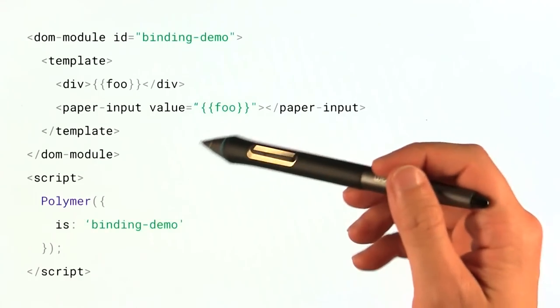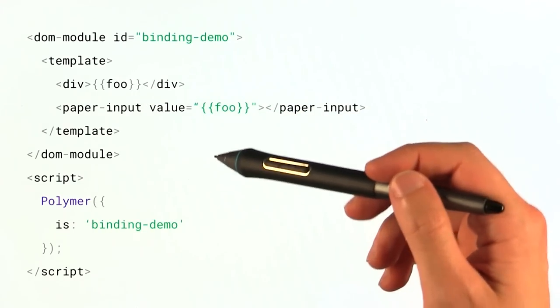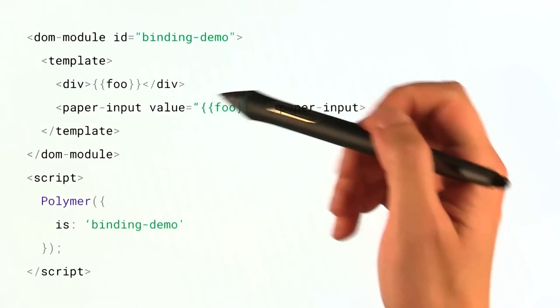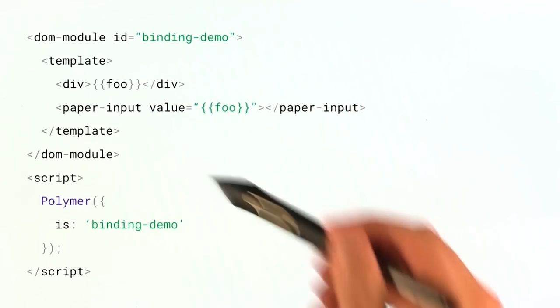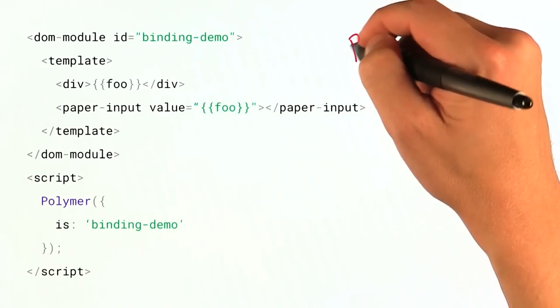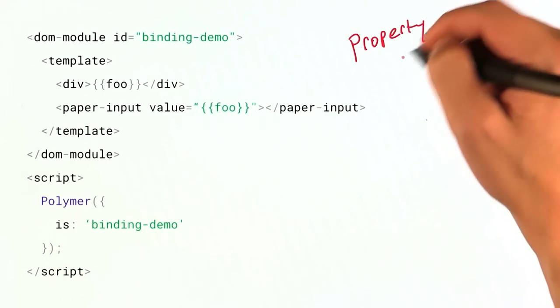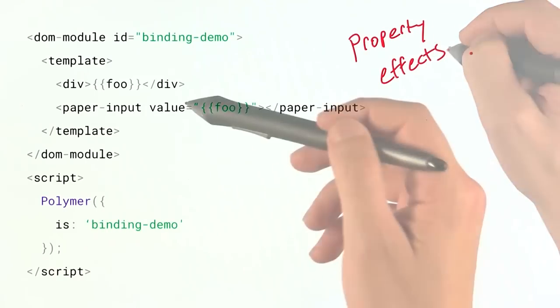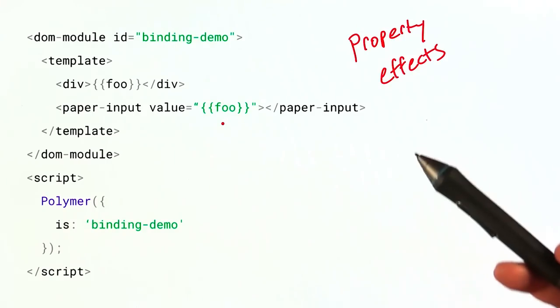OK, so when Polymer first sees your element, you're trying to register it and everything, Polymer is going to parse your element's template and actually look for these nodes with these binding annotations. And when it finds these sort of binding annotations, it's going to create what it calls property effects. And a property effect is a little object that knows which node in the DOM to update whenever this property has changed.